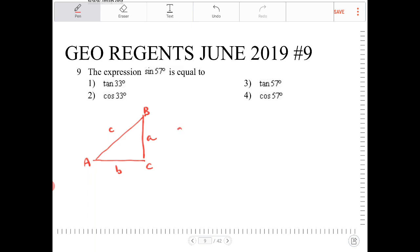So I can then say sine of A is equal to a over c, right, because opposite over hypotenuse.